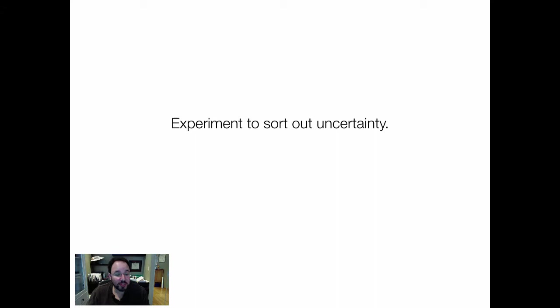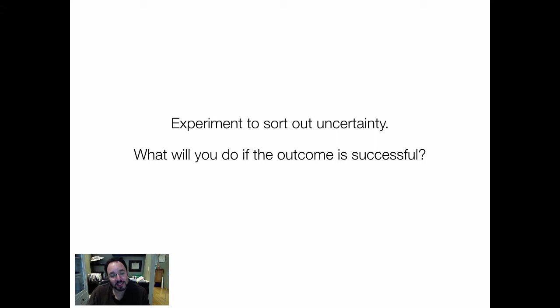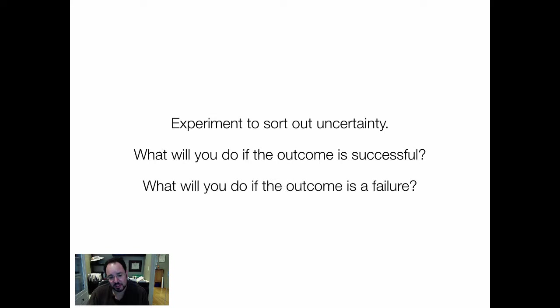When you don't have easy constraints forcing your hand, you're faced with a lot of uncertainty. The only way to sort out that uncertainty is to experiment. But you have to decide, when running an experiment, what the consequence of that experiment will be. What will you do if the outcome is a success? What will you do if it's a failure? The experiment needs to be designed so that it might actually help you with future decision-making regardless of the outcome — you have to learn something to help with future decisions.